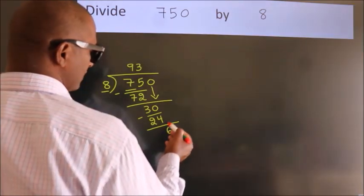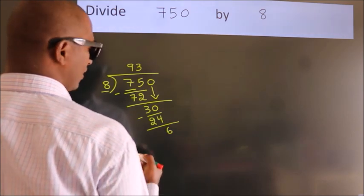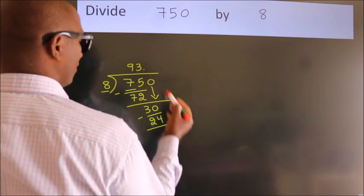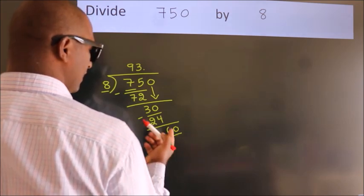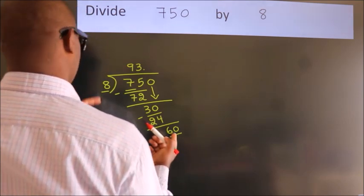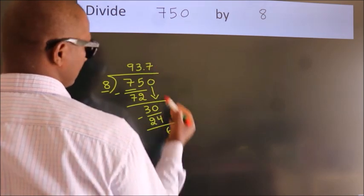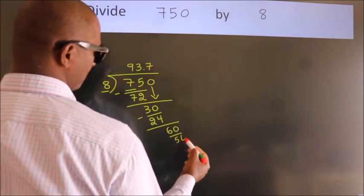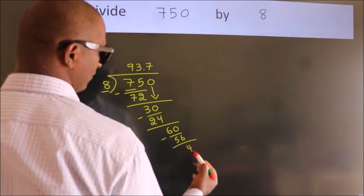After this, no more numbers to bring down. So what we do is put a dot and take 0, making 60. A number close to 60 in the 8 table is 8 sevens, 56. Now we subtract and get 4.